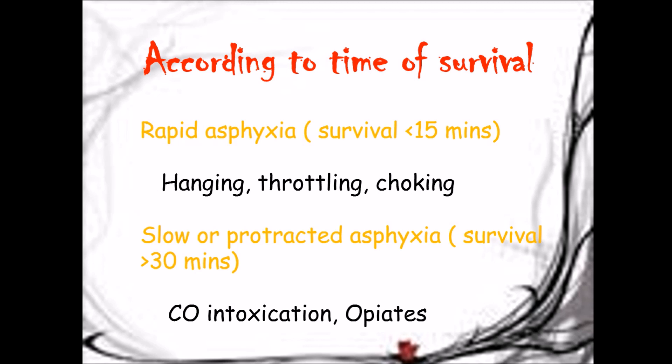According to time of survival, asphyxial deaths are classified as rapid asphyxia if survival is less than 15 minutes — as in hanging, throttling, and choking. Second is slow or protracted asphyxia in which survival time is more than 30 minutes, like carbon monoxide poisoning and opiates.